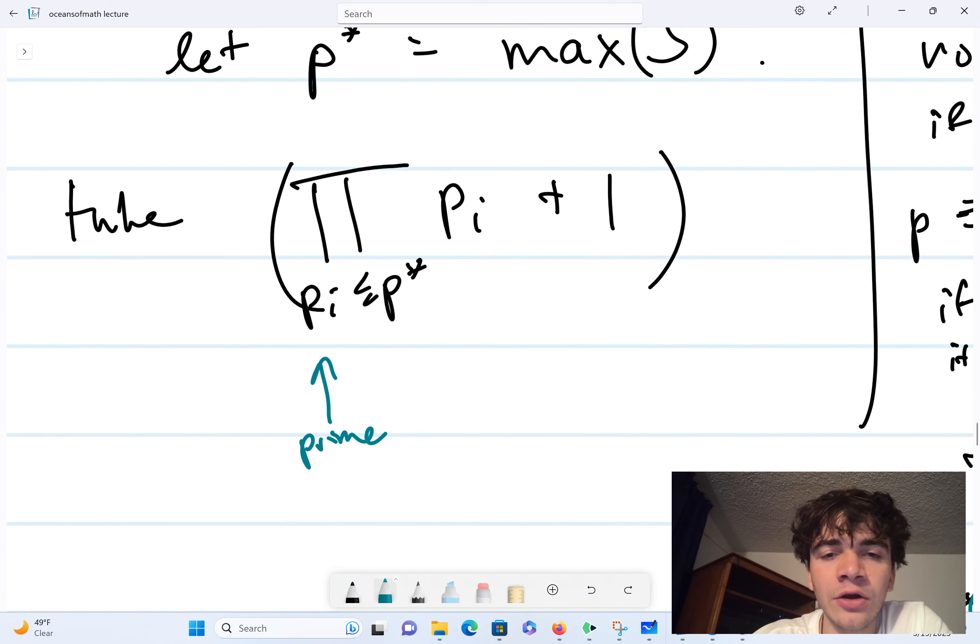All right, so how does that apply here? Well, this product of all primes less than or equal to p star, what is this mod 4? Well, how many factors of 2 does it have? It has exactly one factor of 2 corresponding to the single prime that is 2. So if something only has one factor of 2, it can't be divisible by 4.